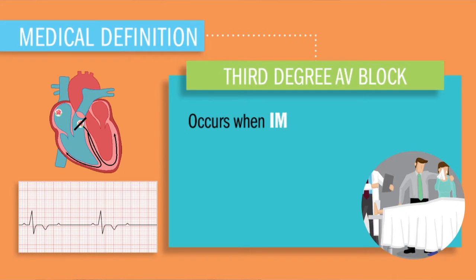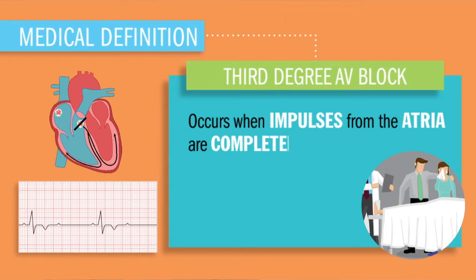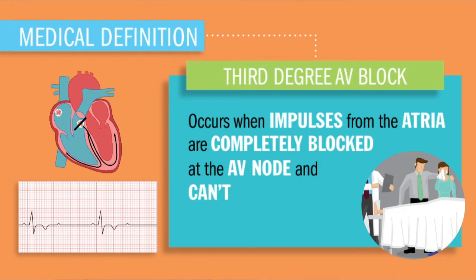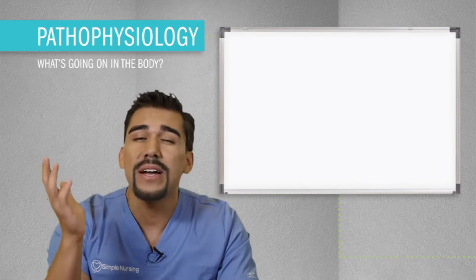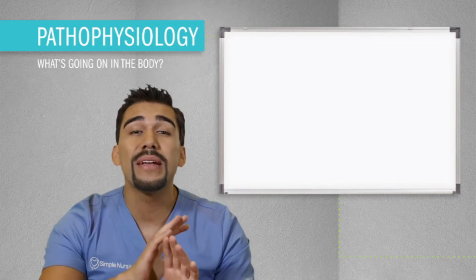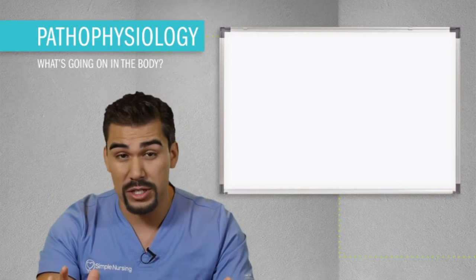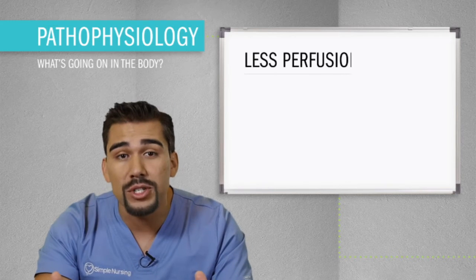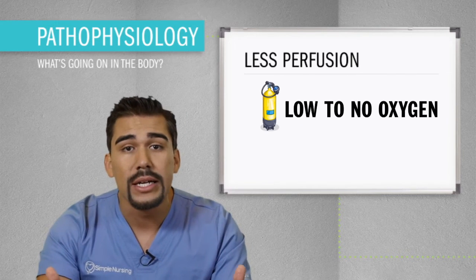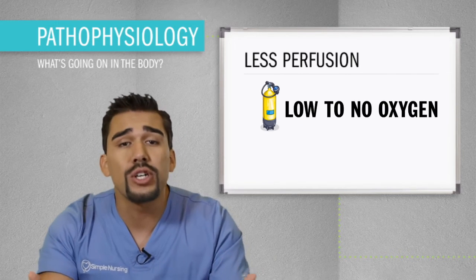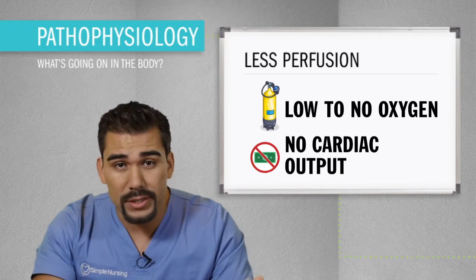Third degree block occurs when impulses from the atria are completely blocked at the AV node and can't be conducted to the ventricles. It's super serious because the ventricles are pumping very, very slowly. This means less perfusion, low to no oxygen — or in fancier terms, low cardiac output.